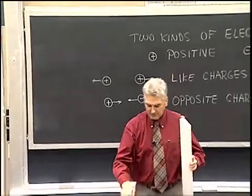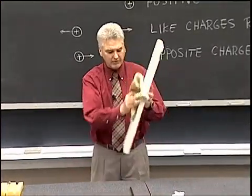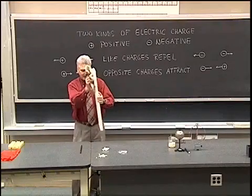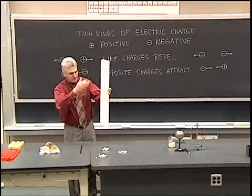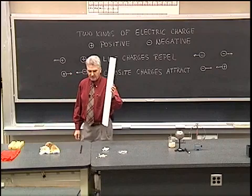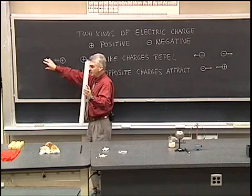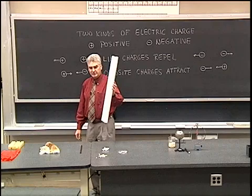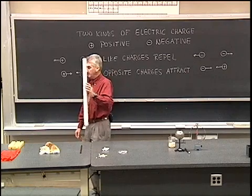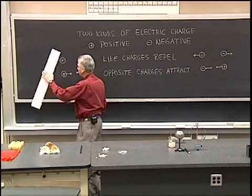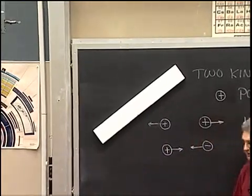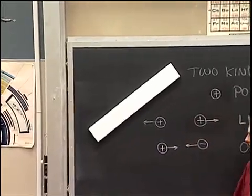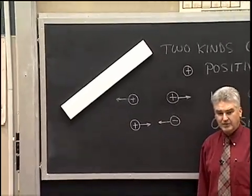But if I rub it with almost anything, I'll take this fur and rub the styrofoam, then the surface will be charged, and that will attract the neutral chalkboard. As we discussed, a charged object can attract a neutral object by redistribution of the electrons, and we now see there's enough charge to cling to the chalkboard.